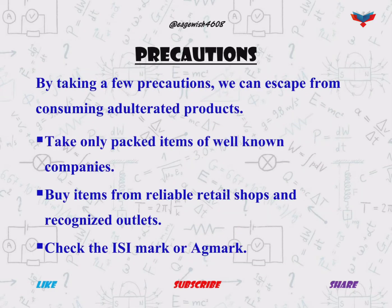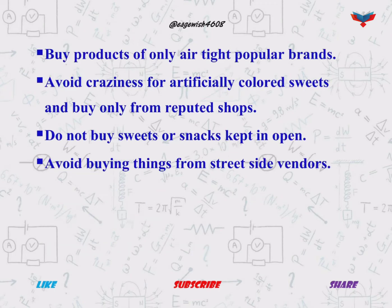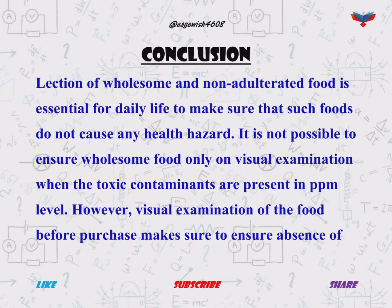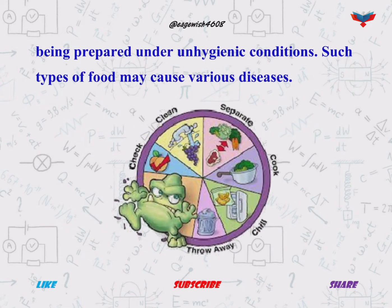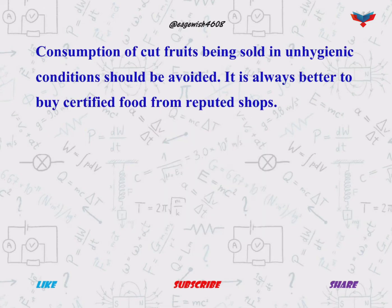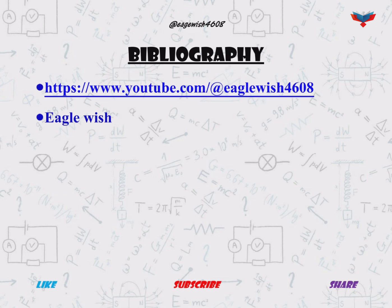After the result we will write the precautions that must be taken in order to avoid any mistakes. At the end of the project we will mention the conclusion on food adulterants. Also don't forget to mention the bibliography.